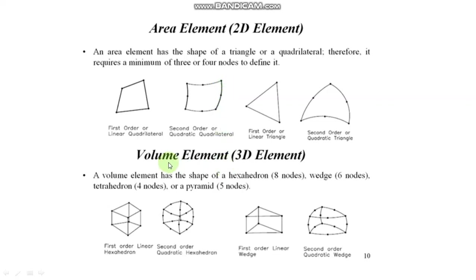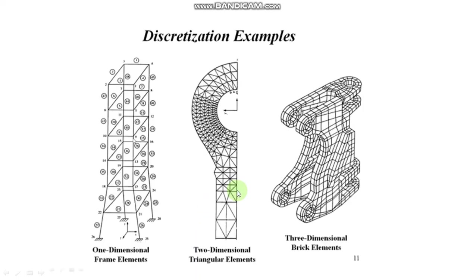Next, three-dimensional element — everyone knows it is used for volume shapes. Volume elements have the shape of hexahedral (eight nodes), wedge (six nodes), tetrahedral (four nodes), or pyramid (five nodes). These are some examples of 1D, 2D, and 3D elements that have been used for analysis purposes.